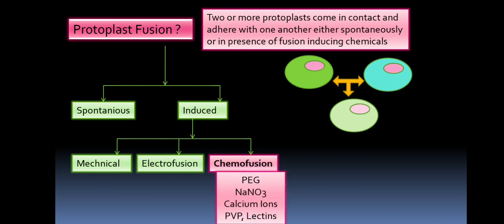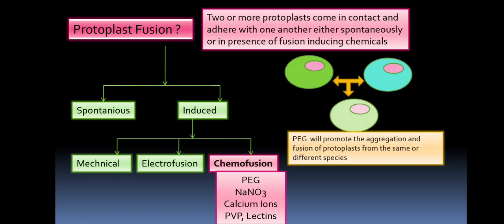Which chemicals? Here comes polyethylene glycol. This is also a chemical which induces protoplast fusion. Apart from this, sodium nitrate, calcium ions, PVP, and lectins are also used. But PEG is most commonly used. The reason is that it can fuse protoplasts from the same or different species, it is inert, and easy to handle. That's why it is more commonly used.